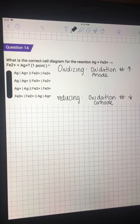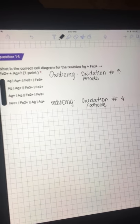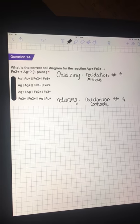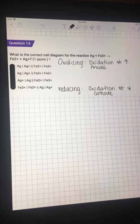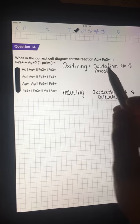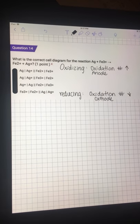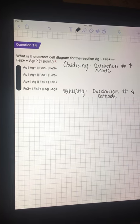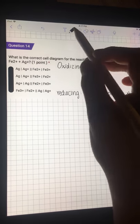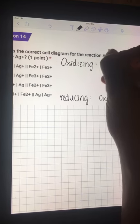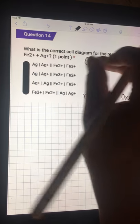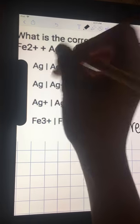What is the correct cell diagram for the reaction? To make the cell diagram, we need to identify the anode and the cathode. The anode is the oxidizing agent, meaning the oxidation number will increase. So if Ag is going from 0 to positive 1...